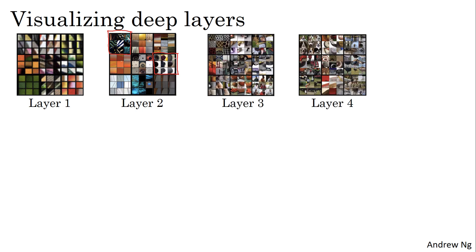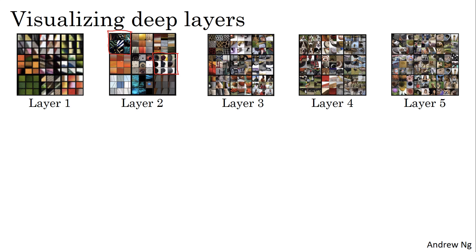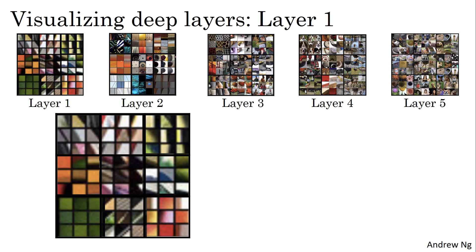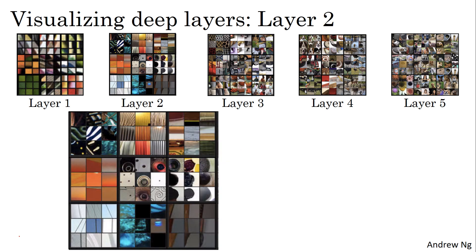Let me zoom in so you can see these image patches more clearly. For layer one, for example, the first unit we saw was highly activated when there's an edge at a particular angle in the input region. Now zooming into layer two, it looks like layer two is detecting more complex shapes and patterns. One hidden unit looks for a vertical texture with lots of vertical lines; another is highly activated by a rounded shape; another looks for very thin vertical lines. The features layer two detects are getting more complicated.